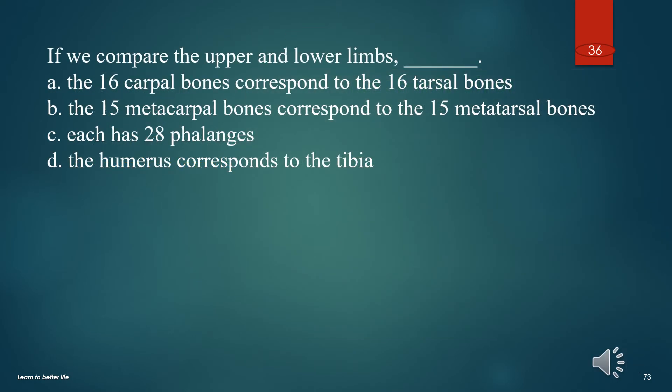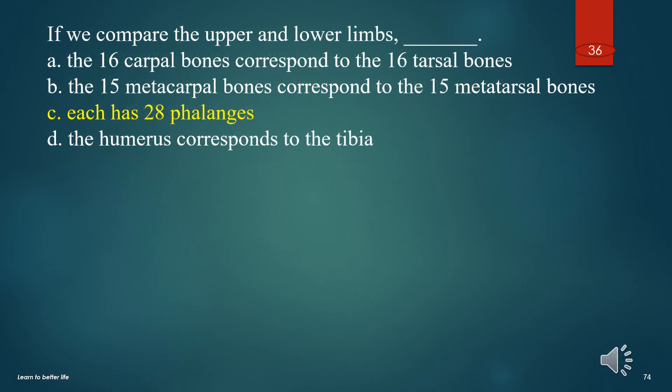If we compare the upper and lower limbs: A. The 16 carpal bones correspond to the 16 tarsal bones. B. The 15 metacarpal bones correspond to the 15 metatarsal bones. C. Each has 28 phalanges. D. The humerus corresponds to the tibia. The answer is C. Each has 28 phalanges.